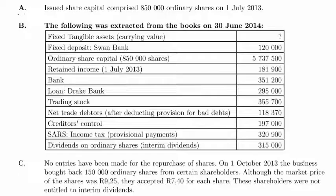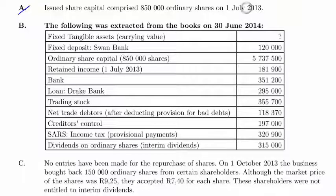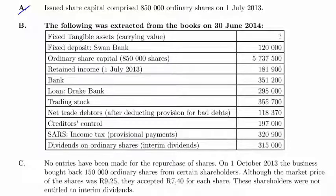Looking at information A, B and C. In information A, we've got issued share capital comprised of 850,000 shares on the 1st of July 2013. That's the first day of my financial year. So in my note, I need to start with the number of shares at the beginning and the value.